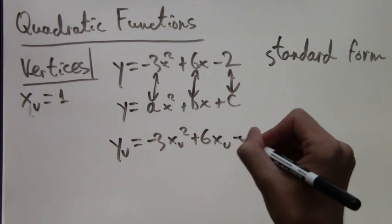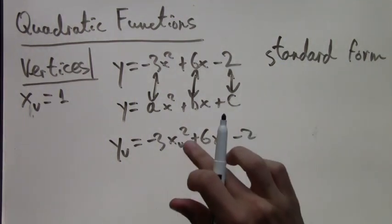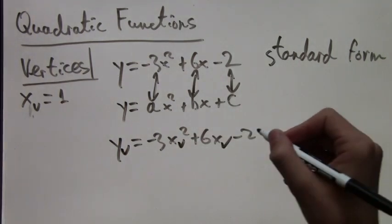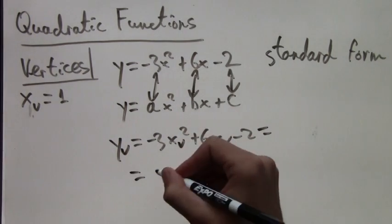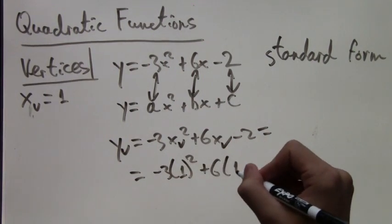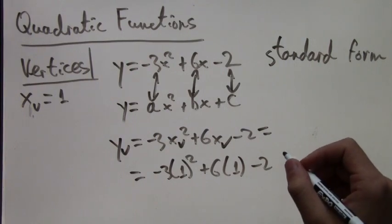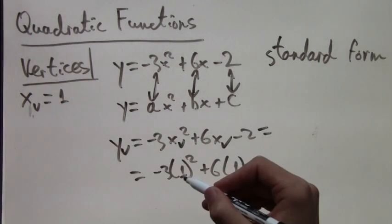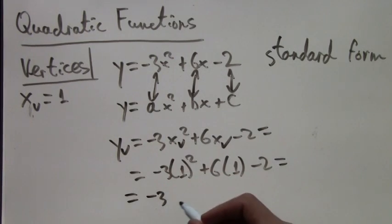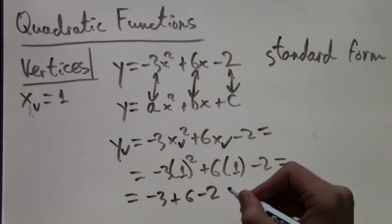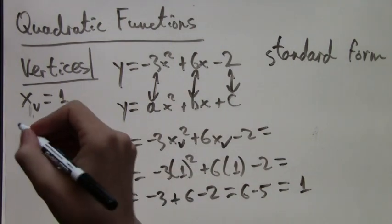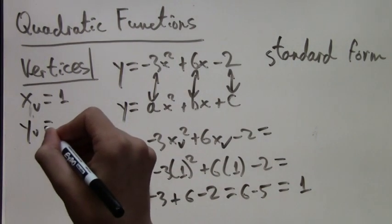So if you plug in the x-coordinate of the vertex into this equation, then we'll get the y-coordinate of the same vertex. So we plug in x equals 1: negative 3 times 1 squared plus 6 times 1 minus 2 equals negative 3 plus 6 minus 2, which are the same as 6 minus 5, which is just 1. So we get that the y-coordinate of the vertex, yv, equals 1.